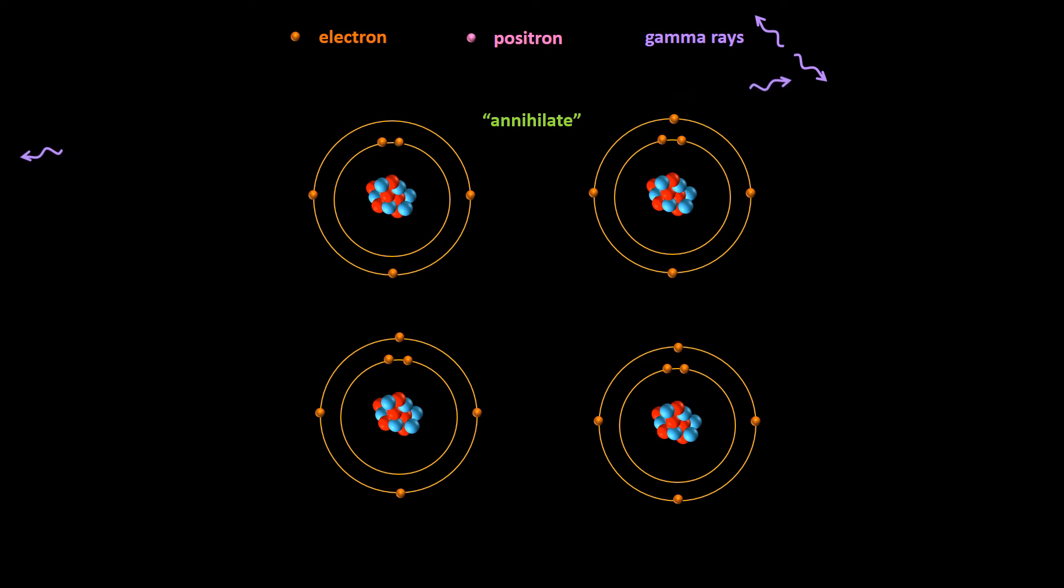As soon as the positron hits the electron, the two completely annihilate one another, and two high-energy gamma rays are produced. These gamma rays always travel in the opposite direction to each other.